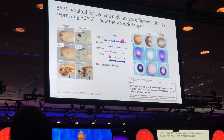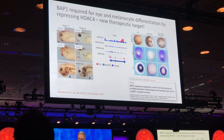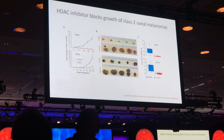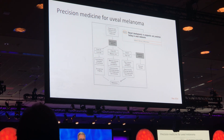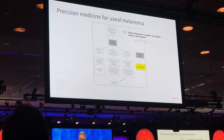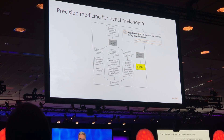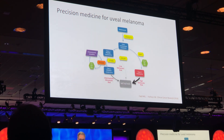Furthermore, we can use this model to screen for therapeutic compounds. As we can see on the right, we've used an HDAC inhibitor specific for HDAC4 that completely reverses this developmental phenotype in Xenopus. And when we go to an in vivo mouse model using human tumor cells, we completely block the growth of uveal melanoma cells using an HDAC4 inhibitor. So now we can propose that these high-risk class 2 patients can be treated in the adjuvant setting with an HDAC4-directed therapy, which would be an oral, well-tolerated agent that we're looking into now for clinical trials.